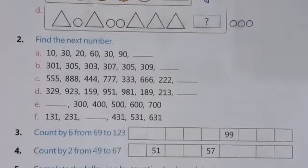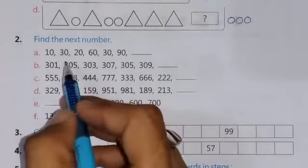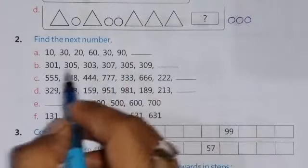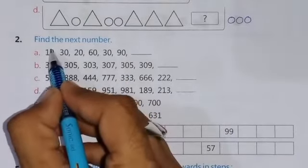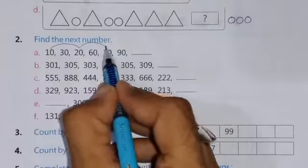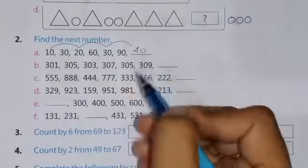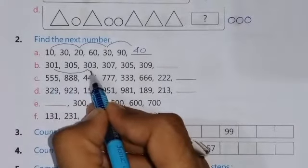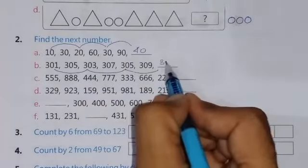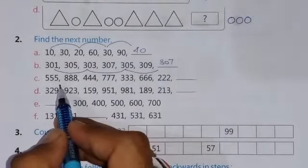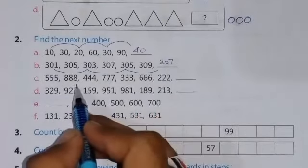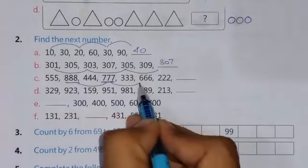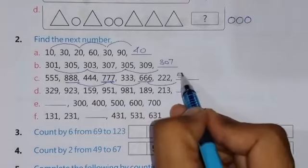See the next question number second and the question is find the next number. Here you can see the numbers are given in a proper pattern and you have to observe it. As you can see here is written 10 then after one number 20, after one 30, then after one there will be 40. Here 301 then 303 then 305 then 307. Here triple 8 then after one triple 7, after one triple 6, then after one there will be triple 5.